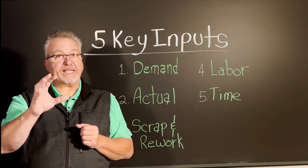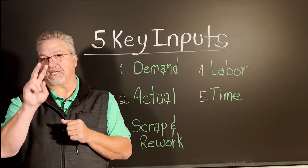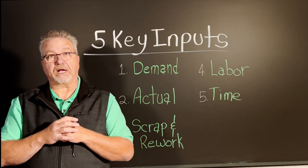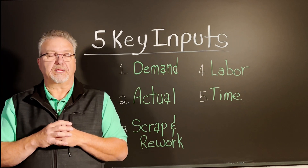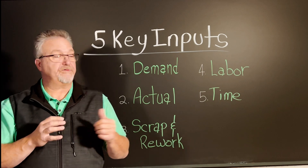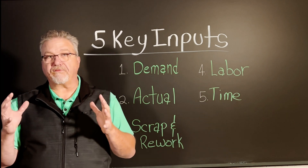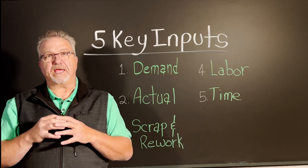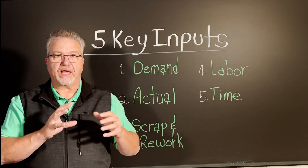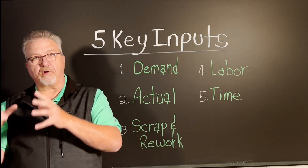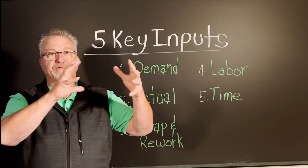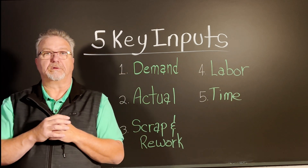Key to any performance metrics is the second input of actual production, especially compared to the previous input of demand. As a matter of fact, it could be said that the most tracked production monitor as to the performance of a process is the comparison of demand versus actual.